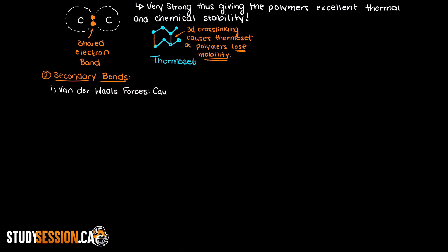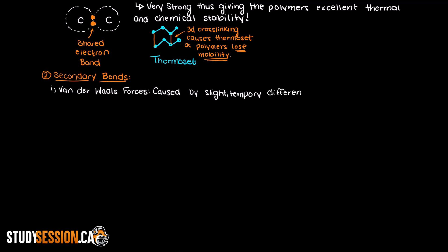Van der Waals forces are weak forces that are caused by slight differences in the electrical charge of individual molecules and atoms at a given time. These types of forces are often described as London dispersion forces or dipole-dipole forces, which we will talk about shortly in the hydrogen bonding section.